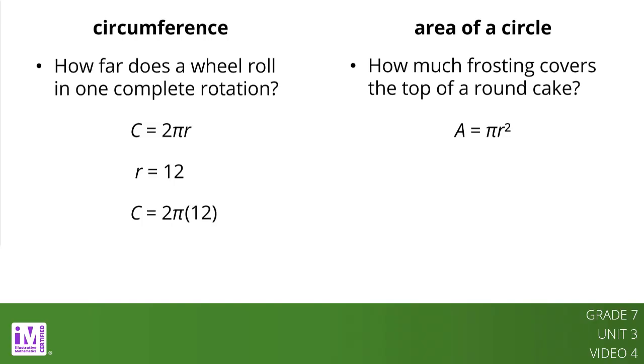2 times 12 equals 24. So the circumference is 24 pi cm. This means the wheel rolls 24 pi cm, which is about 75 cm in one complete rotation.